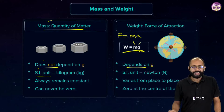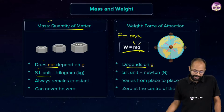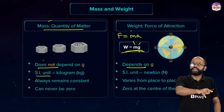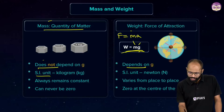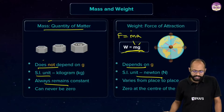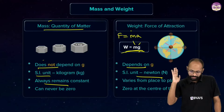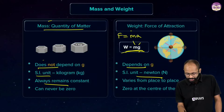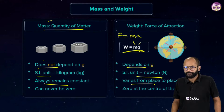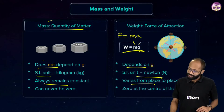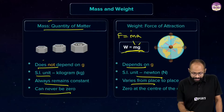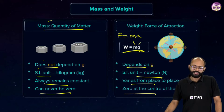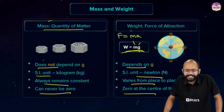Mass is measured in kilograms — its SI unit is kg. Weight, being a force, has the SI unit of newtons. Mass always remains constant; it does not change unless you start moving at the speed of light. Weight, however, varies from place to place. Mass can never be zero, but weight can be zero — for example, at the center of the earth.